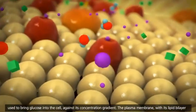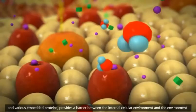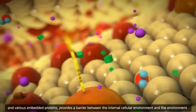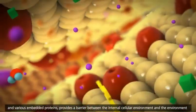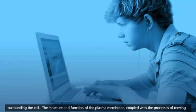The plasma membrane, with its lipid bilayer and various embedded proteins, provides a barrier between the internal cellular environment and the environment surrounding the cell.